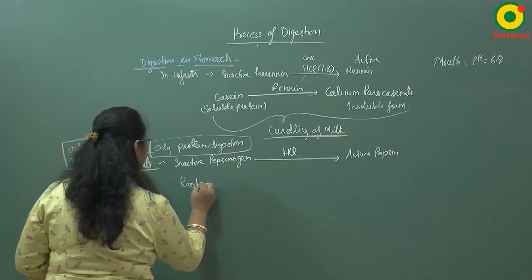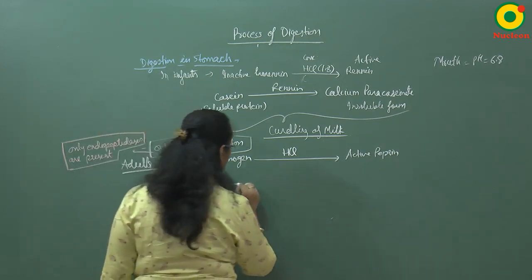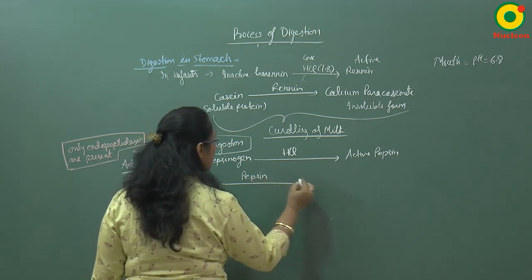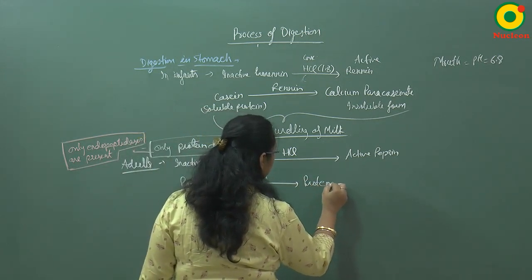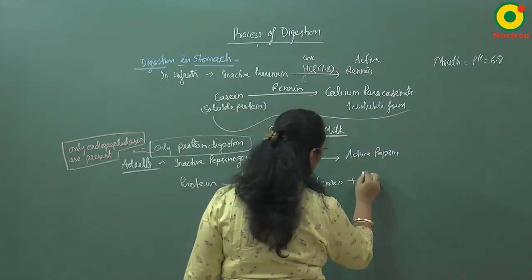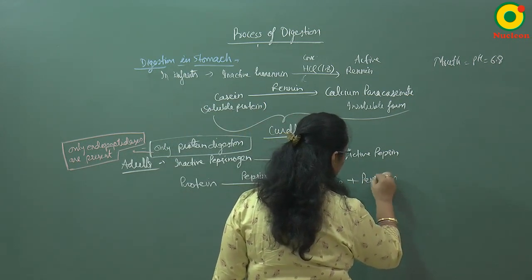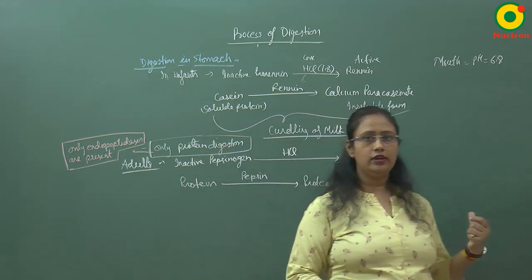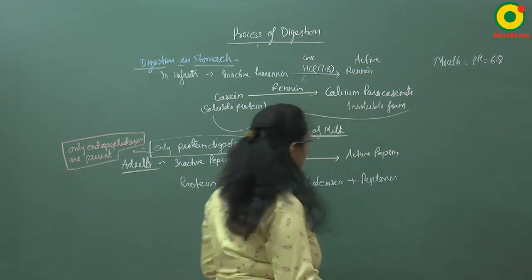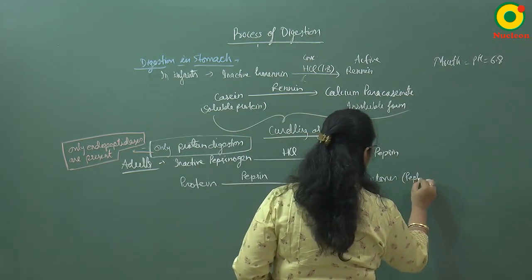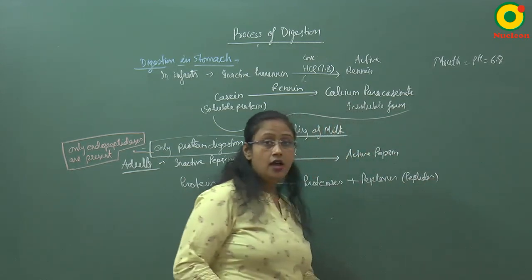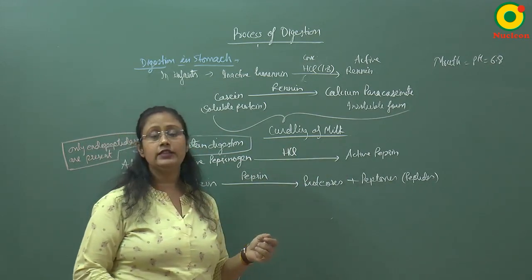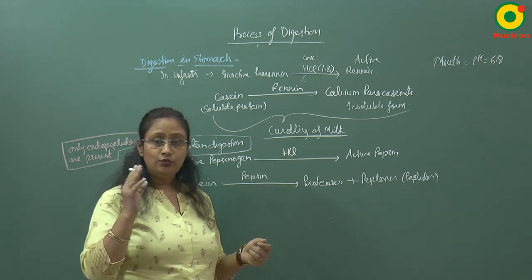Pepsin will convert proteins into proteoses and peptones. Peptones are peptides. Now gastric cells are secreting three things. The gastric juice is made up of three substances: mucus, HCl, and pepsin.